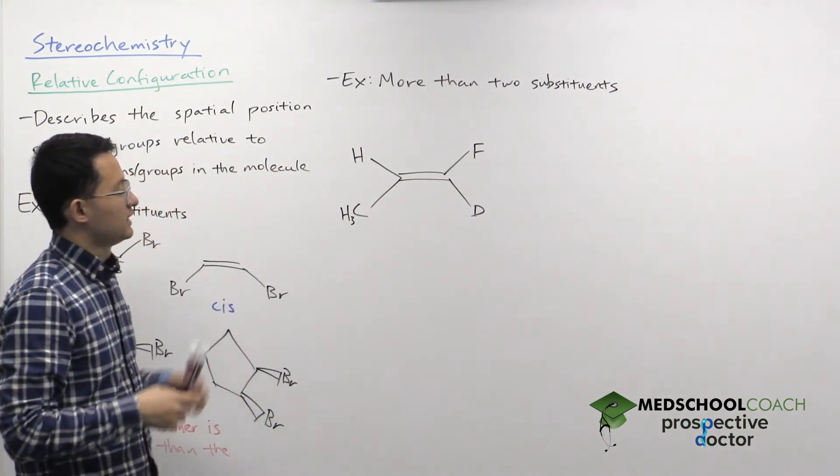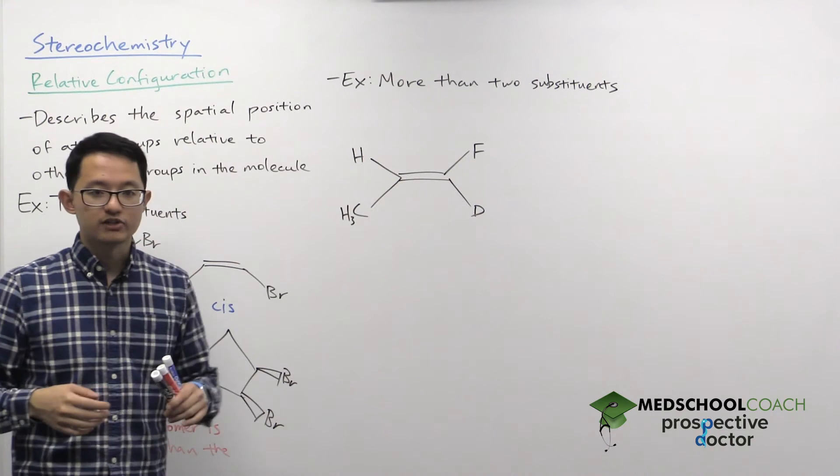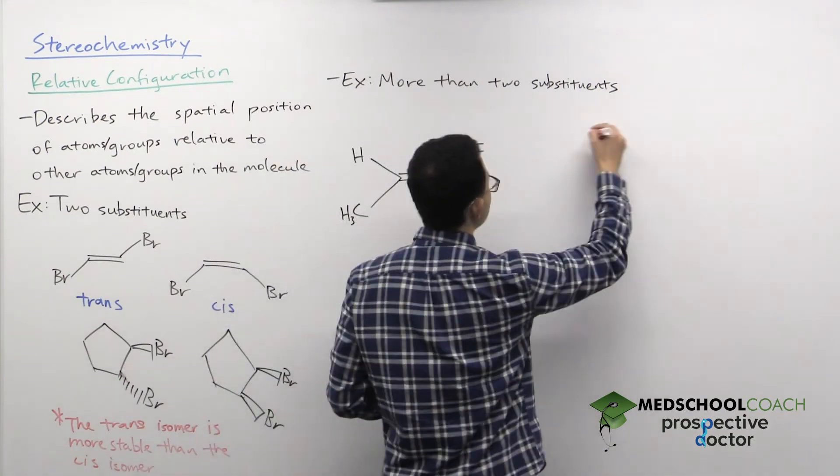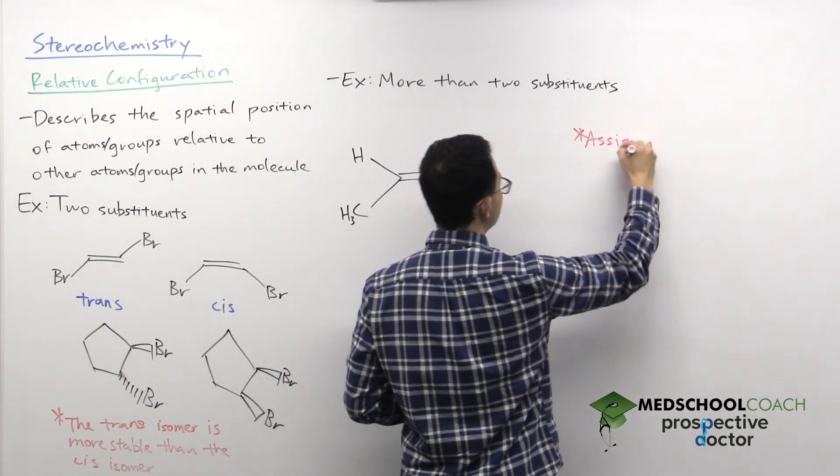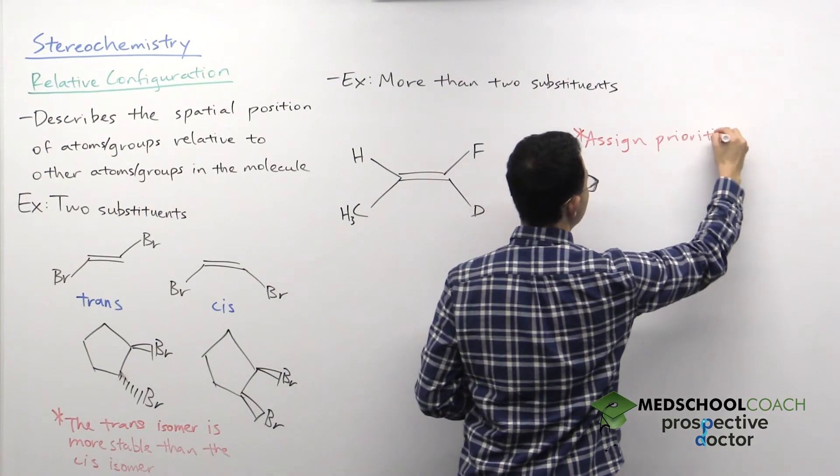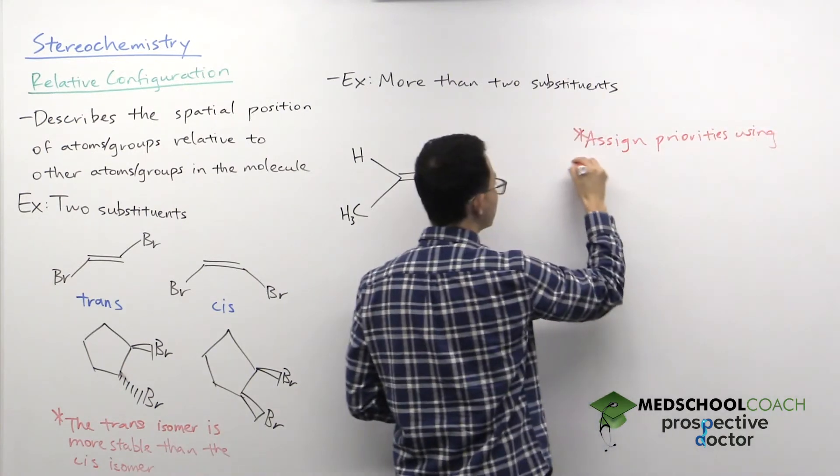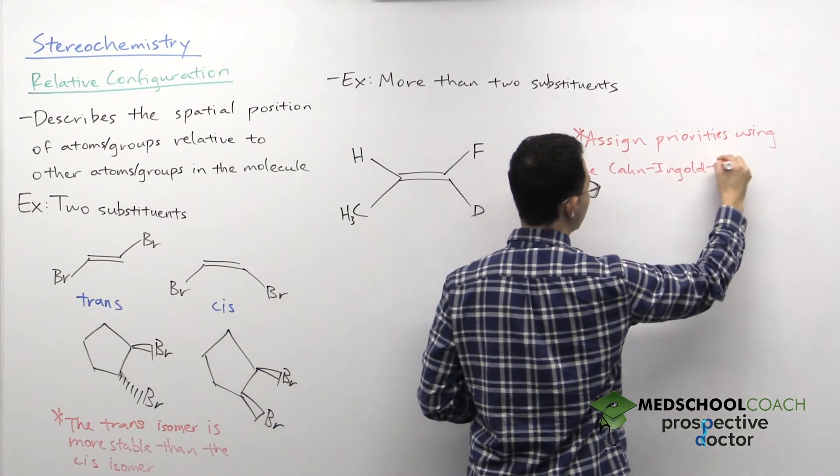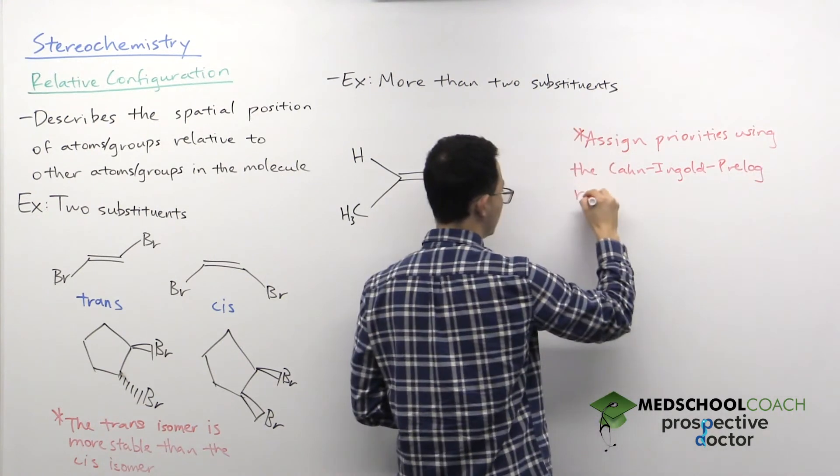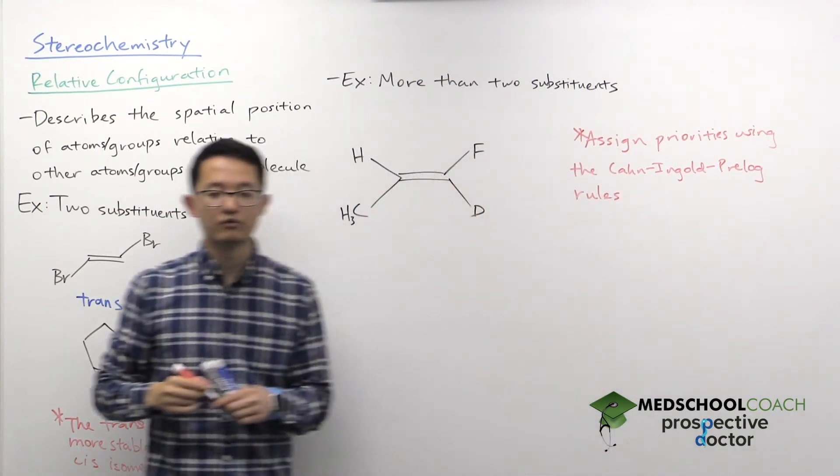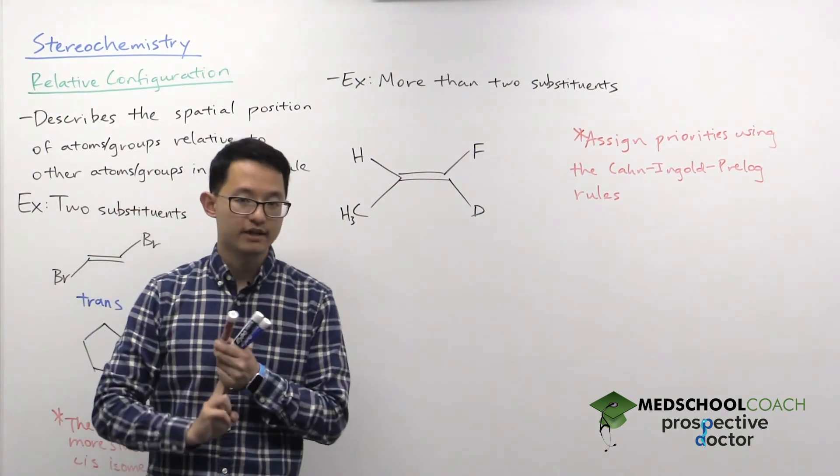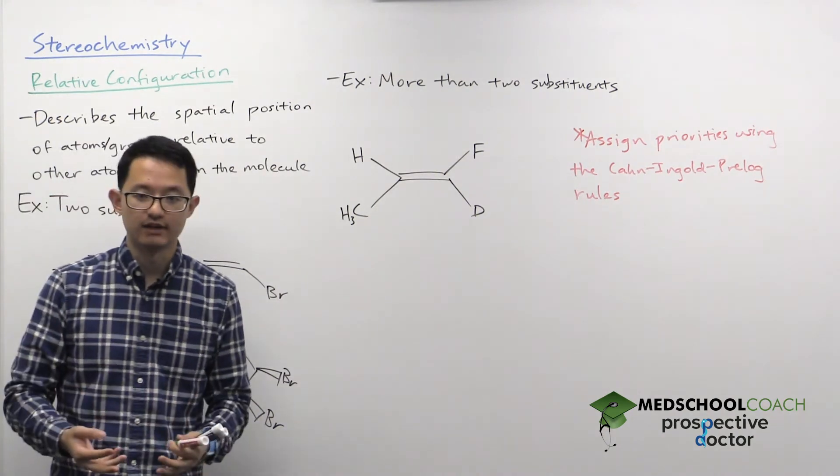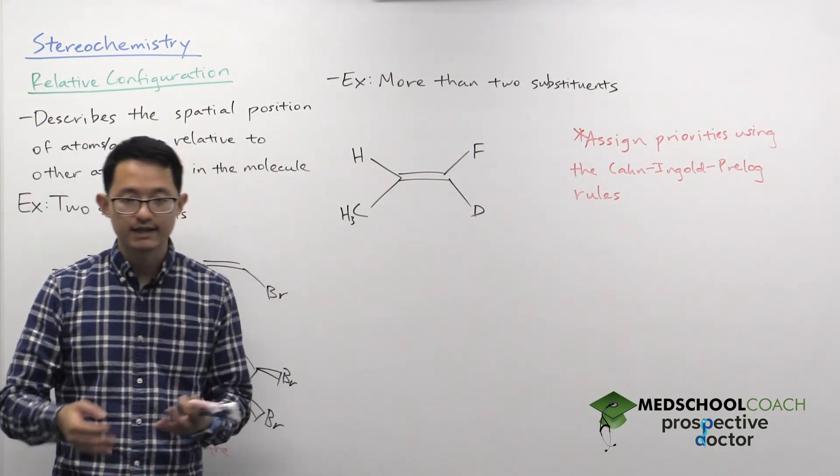So the way that we assign the relative configuration here is actually an application of something we've discussed before, and that is the first step we're going to do is you're going to assign priorities using the Cahn-Ingold-Prelog rules. And you'll recall in the Cahn-Ingold-Prelog rules, we rank by atomic number, then by atomic mass, then by finding the first point of difference if necessary. And remembering that if you have multiple bonds, that counts as multiple atoms.